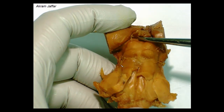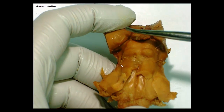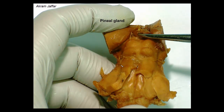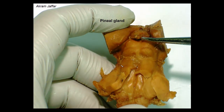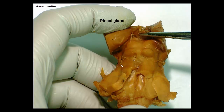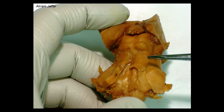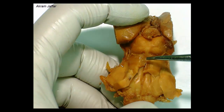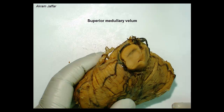In between the two thalami, this is the pineal gland. It is not related to the midbrain but can be seen here. Again, you can see the trochlear nerve, and this is the region of the superior medullary velum.